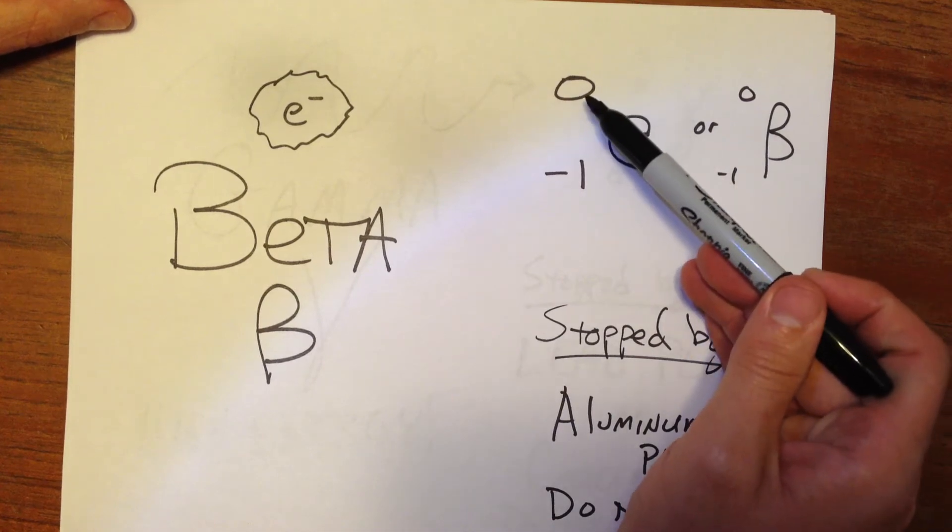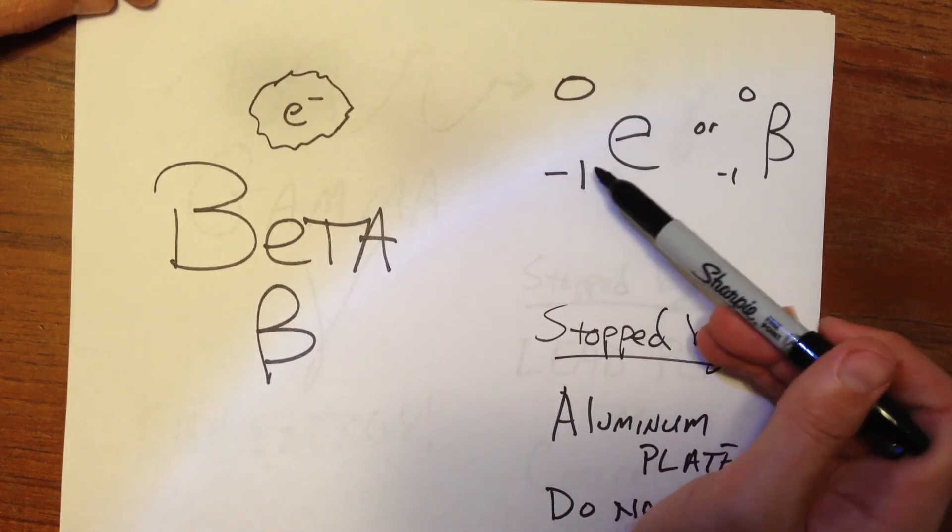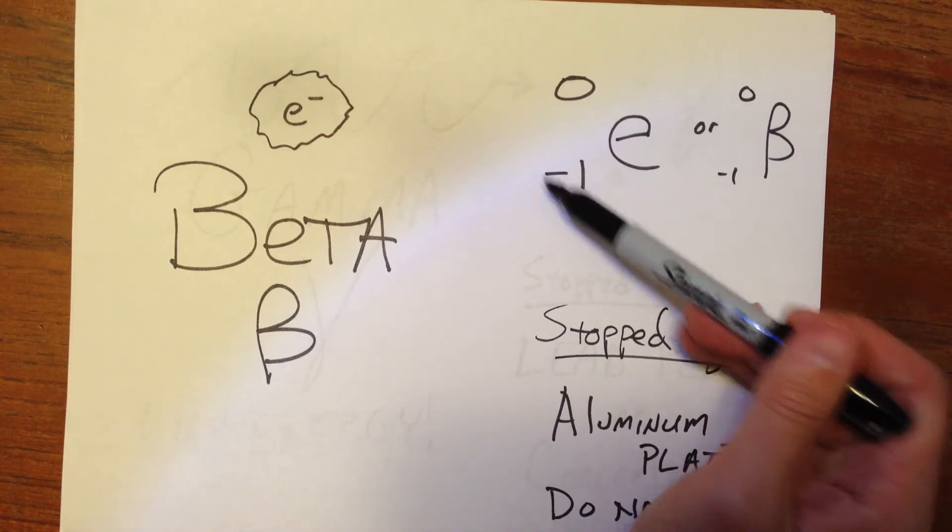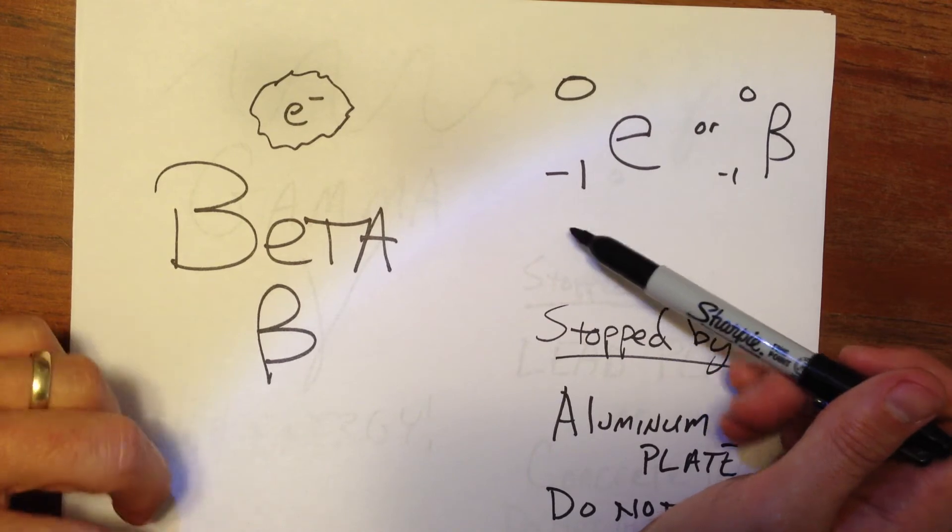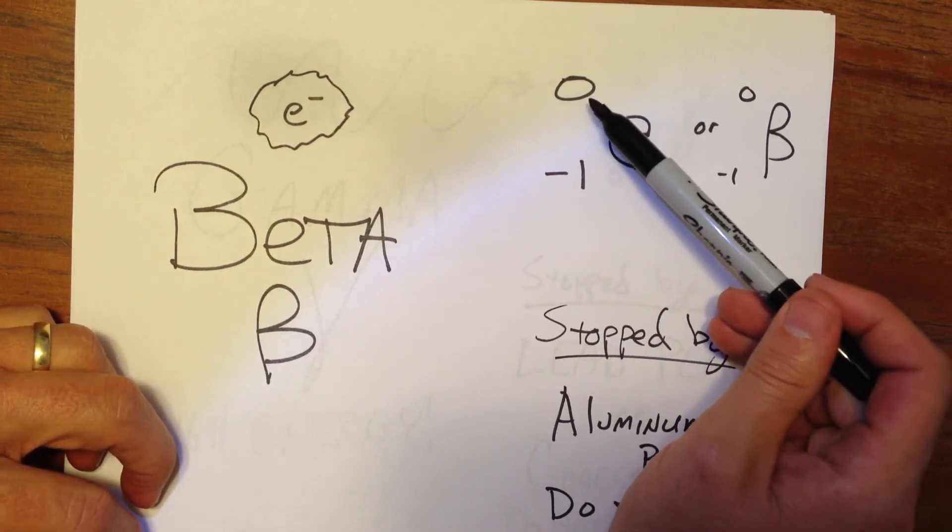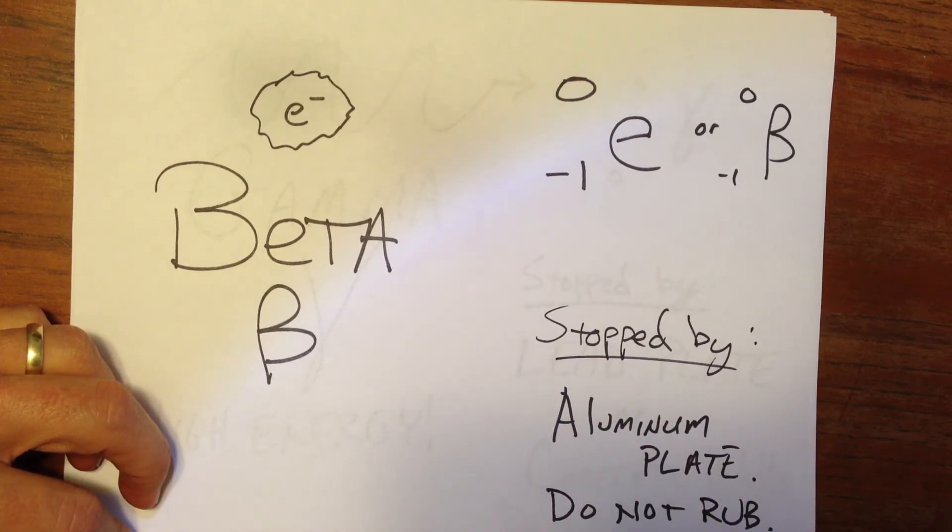Remember, the top number is the mass number, and the bottom number is the atomic number. Well, this guy has not only not a positive charge, but actually a negative charge. So its Z number, its bottom number will be negative 1. And since it has effectively no mass, it has a 0 on the top. So that will be how we show a beta particle in a nuclear reaction.